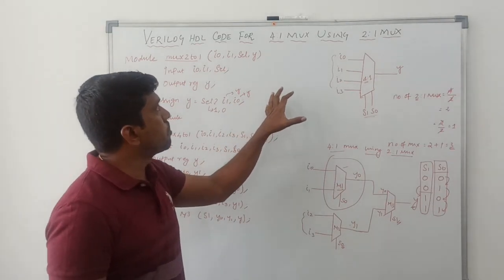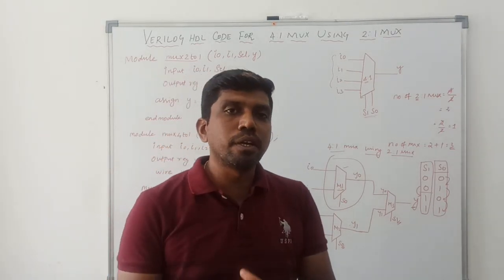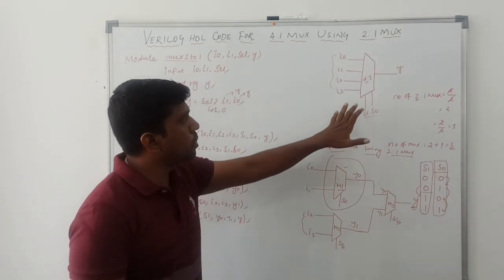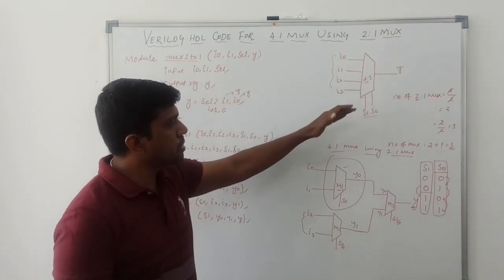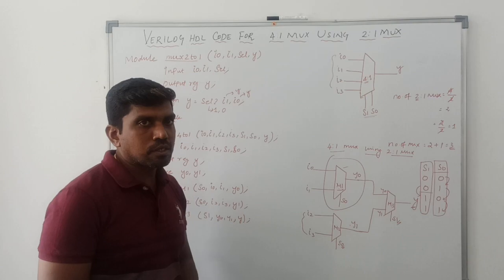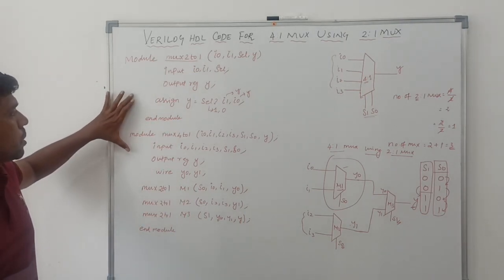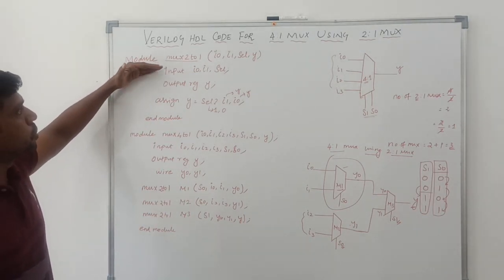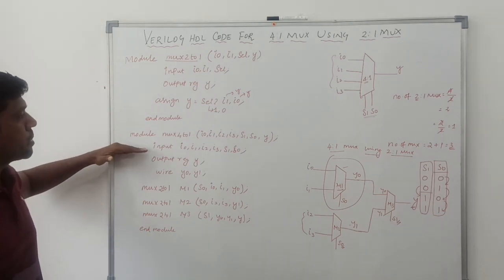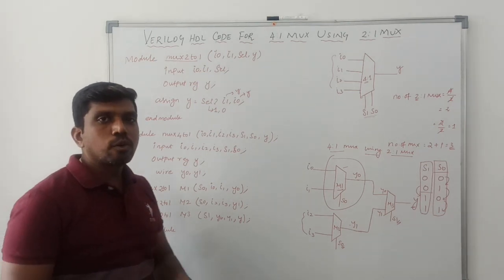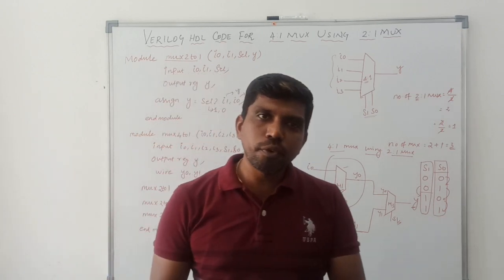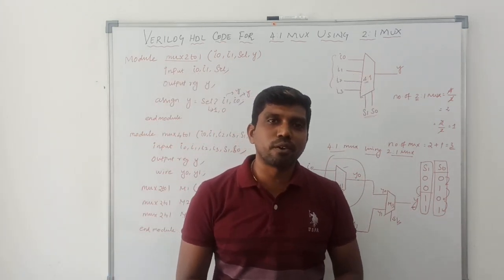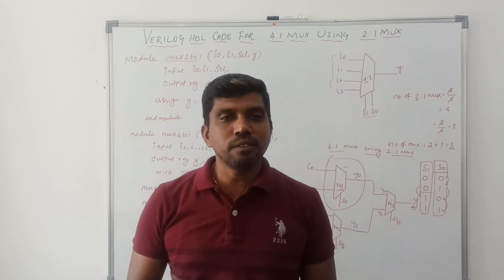This is the simple way to write a 4-to-1 mux using 2-to-1 mux. First you draw the 4-to-1 mux structure, then convert it using 2-to-1 mux instances. In this program we have two modules: the first module represents the 2-to-1 mux, and the second module represents the 4-to-1 mux. I hope you understand the concept. If you are watching for the first time, kindly subscribe and support us. Thanks for watching.